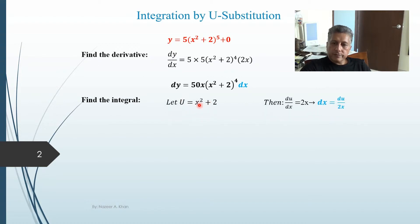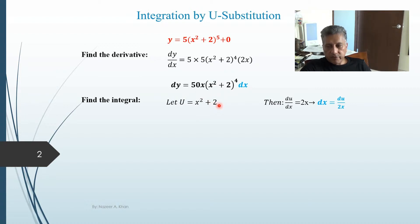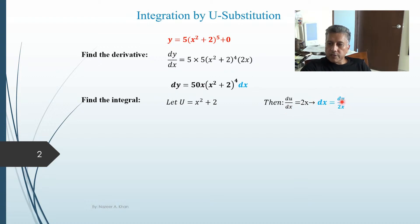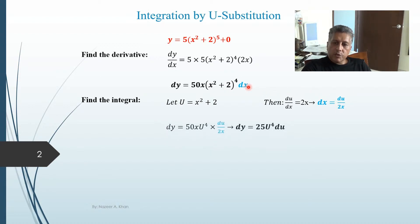Let's use U-substitution. I'm going to designate the inside of the bracket as u, take its derivative, solve for dx, substitute into the integral, and then integrate. So u equals the inside of the bracket. Taking its derivative: du/dx equals 2x. Because I want to substitute for dx, I'll solve for dx by rearranging: dx equals du divided by 2x. And we know this polynomial equals u.